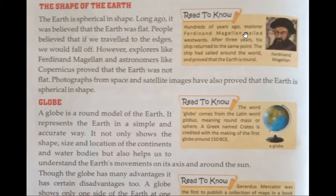Hundreds of years ago, explorer Ferdinand Magellan sailed westwards. After three years, his ship returned to the same point. The ship had sailed around the world and proved that the Earth is round.